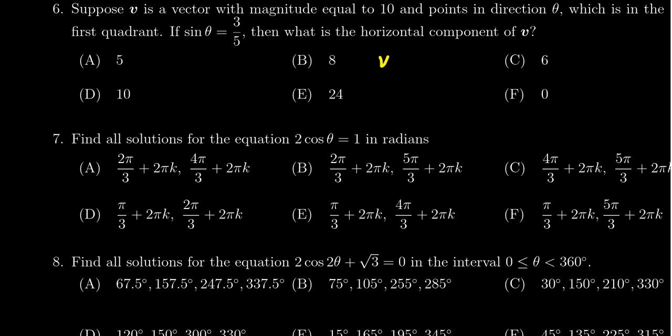The vertical component, Vy, equals the magnitude 10 times sine of theta. So if they had wanted the vertical component, that would be a lot easier.